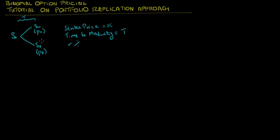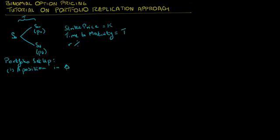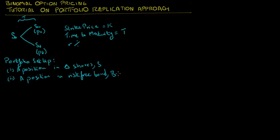Now we have to set up a portfolio using stock and bond such that it exactly replicates the payoff of the option. If we are able to do that, then under no arbitrage, the price of this portfolio must be the same as the price of the option. So the portfolio comprises of delta shares S and a position in a risk-free bond B.